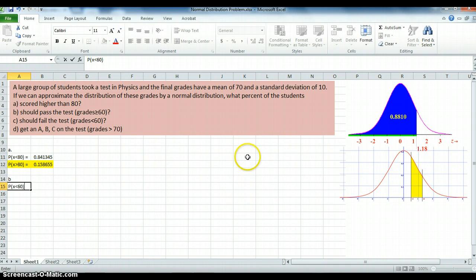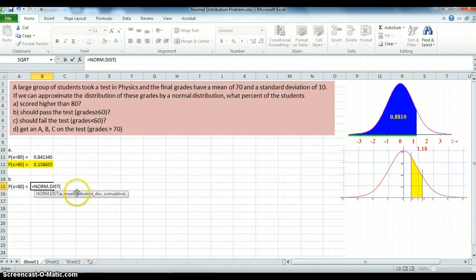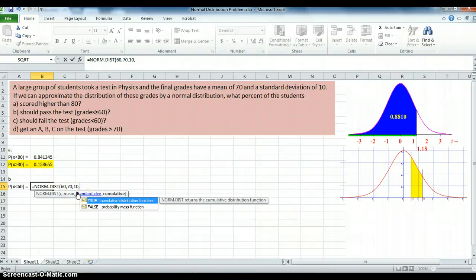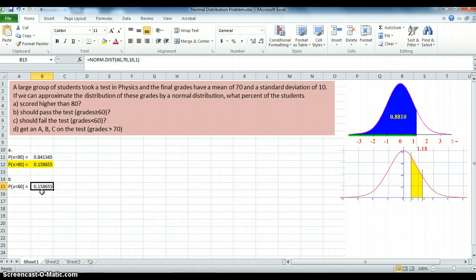So let's find this and do the same 1 minus the probability that we're just about to find. So this is NORM.DIST. And it's the same thing. Instead of 80, we put 60, but the other numbers are all the same. 70, 10, 1 for cumulative distribution. And, oh my, I get the same tail distribution I got in the previous problem.